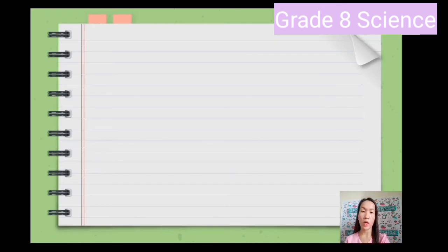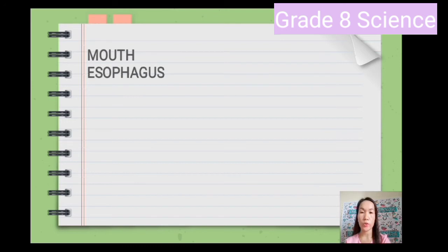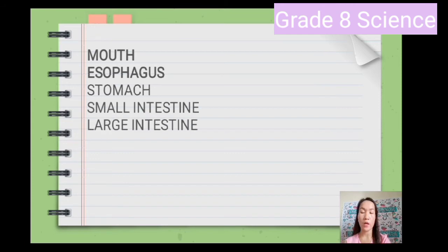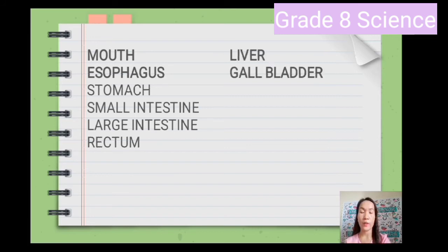Those are the accessory organs of the digestive system. Let us have a short generalization of the different parts. For the gastrointestinal tract, we have: mouth, esophagus, stomach, small intestine, large intestine, and rectum. For the accessory organs, we have: liver, gallbladder, and pancreas. And those are the different parts of the digestive system.